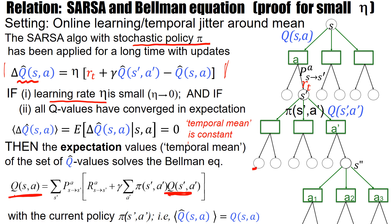Two statements to start with: I'm not showing that SARSA converges to the Bellman equation — rather, if SARSA has converged, then yes, we are going to find the Bellman equation. And second, it's not SARSA itself that converges — it's the expectation value of SARSA, because SARSA itself will always fluctuate a little bit due to the small but still finite learning rate η.